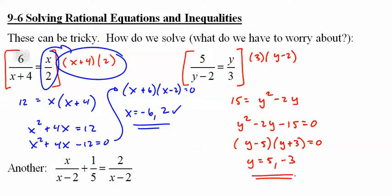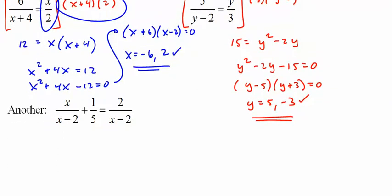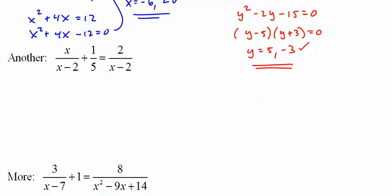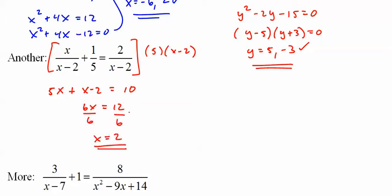And again looking at it, checking it, it works. Always check it. Here's why: take this equation, multiply everything by 2, 5, and x minus 2. You get 5x, x minus 2, 10, 6x equals 12.